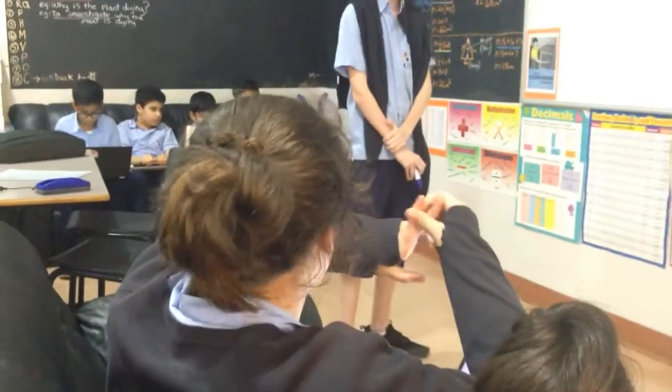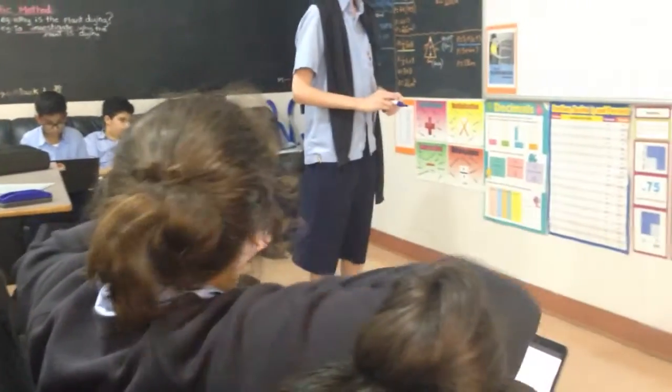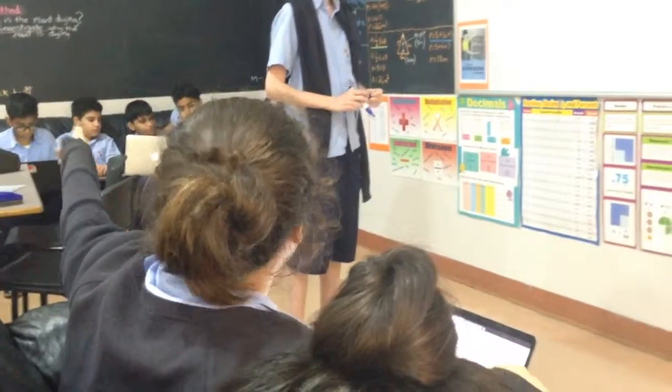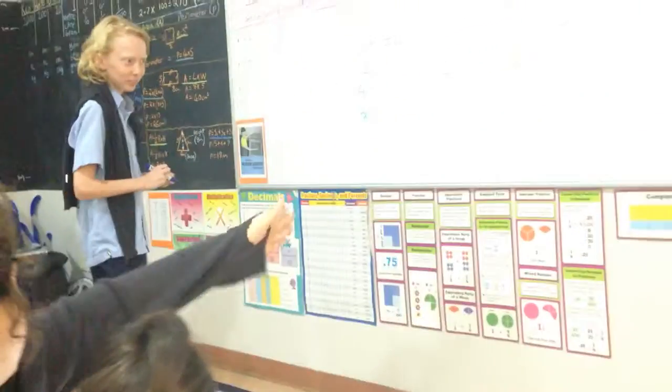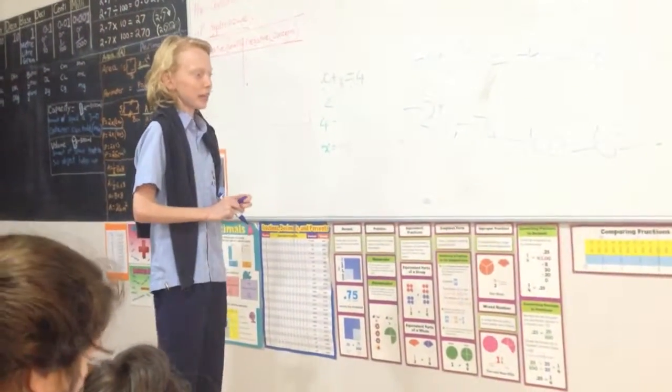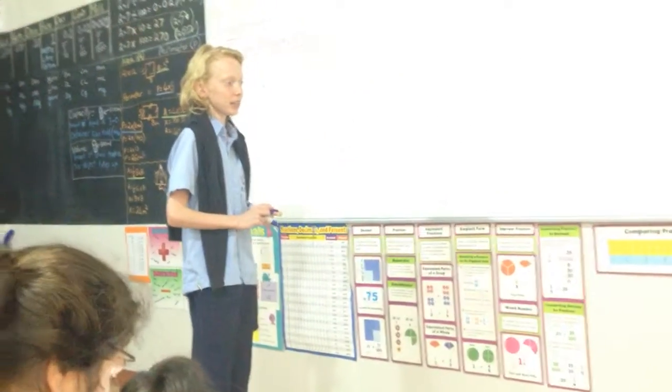But because now we're doing the opposite, it's gonna be division, since opposite of multiplication is division. Okay, so what's negative 102 divided by 6?